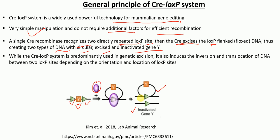While the Cre-LoxP system is predominantly used in genetic excision, it also includes inversion and translocation of DNA between two LoxP sites, and that depends on the orientation and location of the LoxP sites. So orientation and location of LoxP sites determines the type of recombination event — whether it is translocation or inversion.